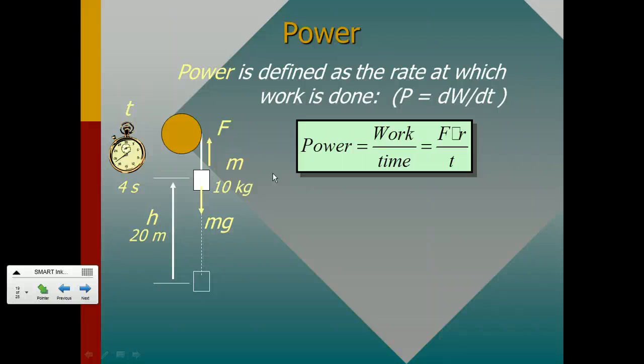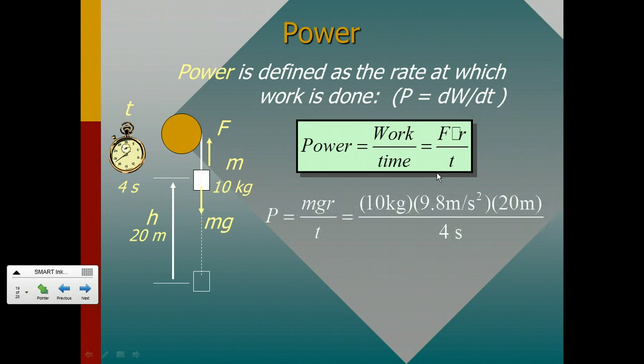Or the work is just force times distance. So if this is a 10 kilogram object and it is lifted up a distance of 20 meters, that means our force is 10 times 9.8, right? That's the force of gravity, mg, and I said this force up here was equal to mg.